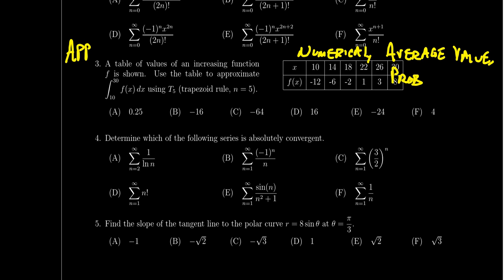Question number four will be a series question — much like we saw on exam four, a multiple choice question asking you to determine the convergence or divergence of various series by various tests. In some situations if it's convergent, it'll ask you to find the sum. This version asks which of the following six series is absolutely convergent. Other possibilities include: which is divergent by the divergence test, which is convergent by the p-test, which is convergent by the alternating series test, which is a convergent geometric series and what is its sum, or which is a telescoping series and what does it sum to.